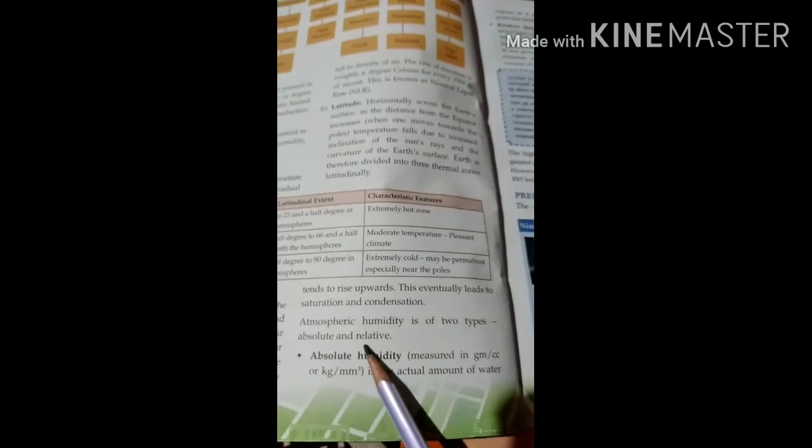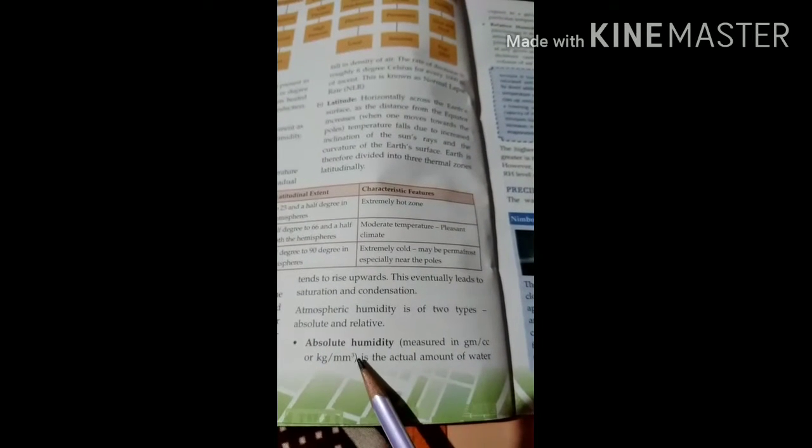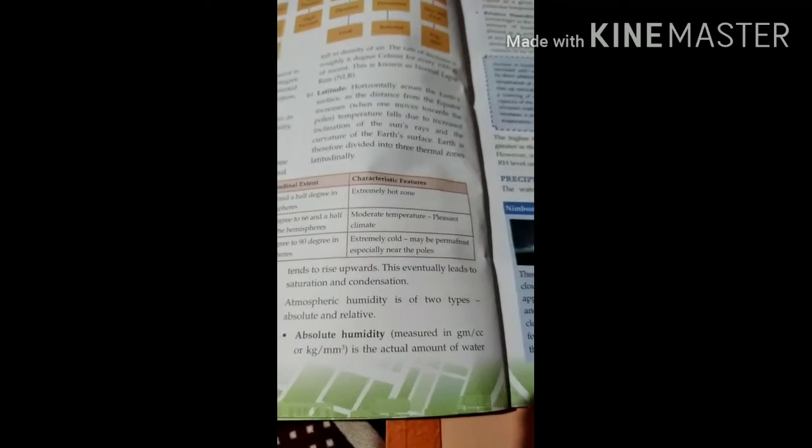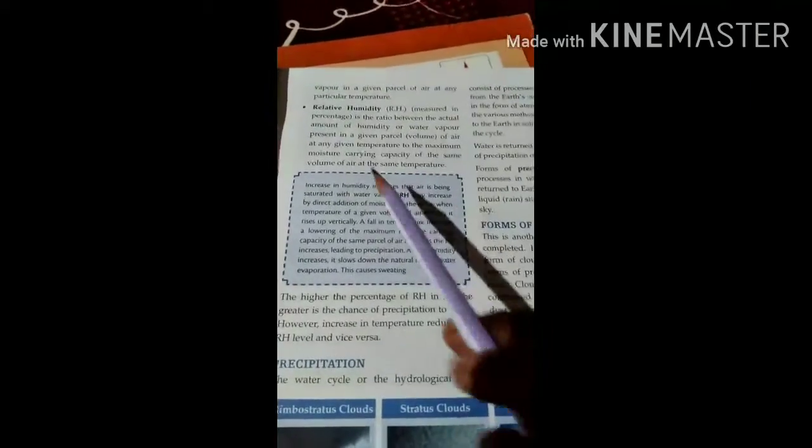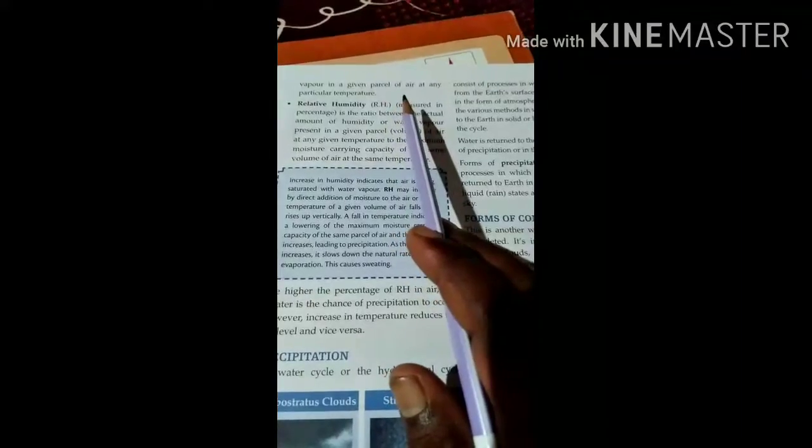Atmospheric humidity is of two types: absolute and relative. The absolute humidity, measured in grams per cc or kilogram, is actually the amount of water vapor in a given parcel of air at any particular temperature.